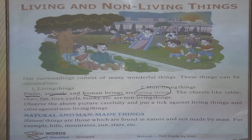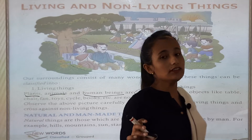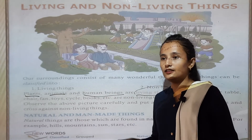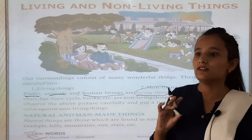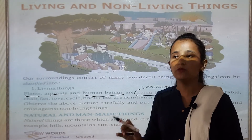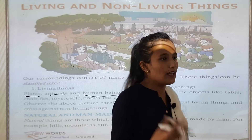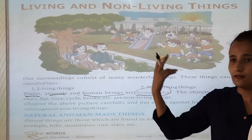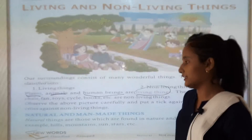Natural and man-made things. What are natural things and what are man-made things? Natural things are those we can see — the stars, the moon — they are not made by man. For example, planets, the stars, the moon — they are natural things.